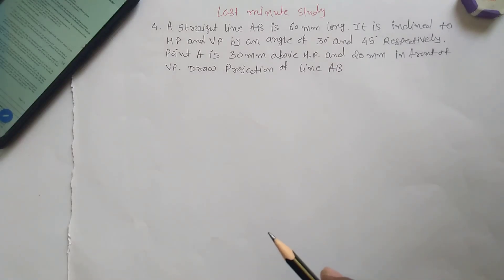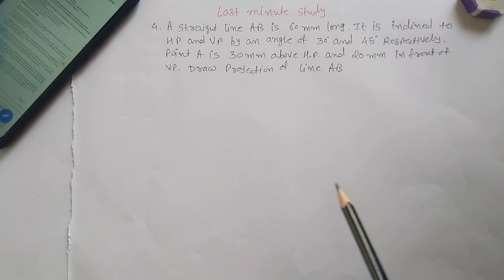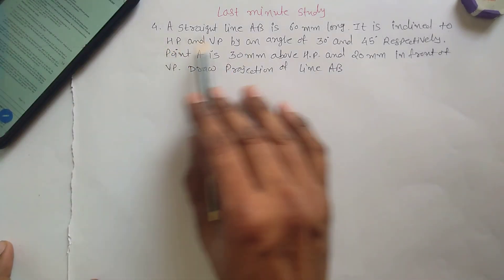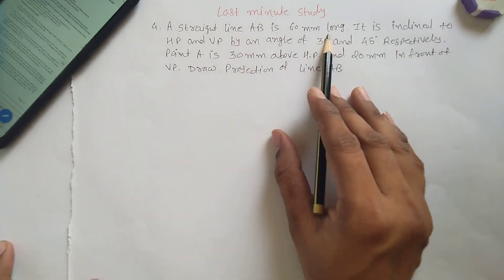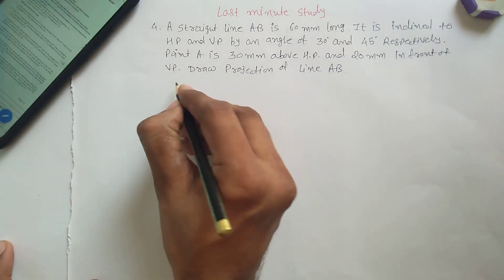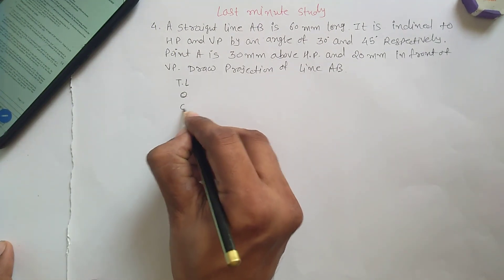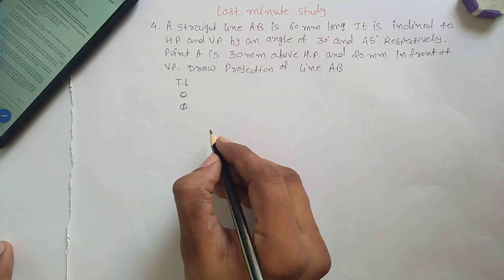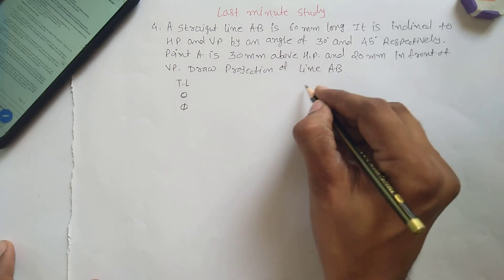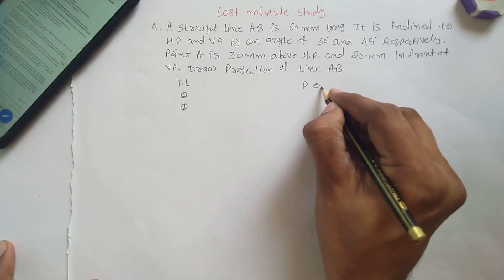Problem number 4 from sheet number 3. This is a projection of line problem. A straight line AB is 60 mm long. We have to find out some of the data: true length, theta, phi, and the position of the end point.